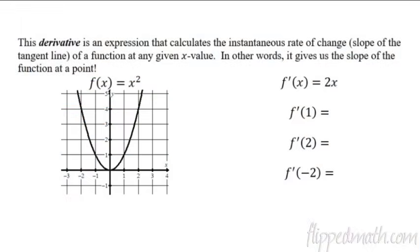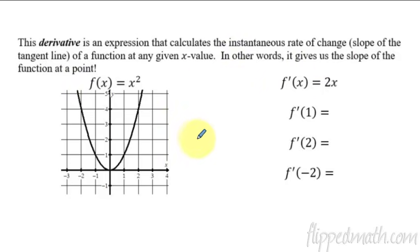So let's start off with my own personal definition — just how I would describe it in words to kids who don't know what a derivative is. A derivative is an expression or equation that calculates the instantaneous rate of change, in other words, the slope of the tangent line of a function at any given x value. The derivative spits out the slope of the function at a point.